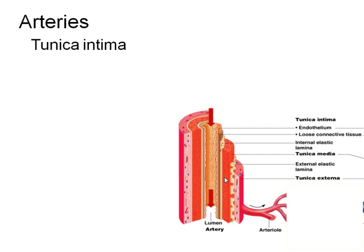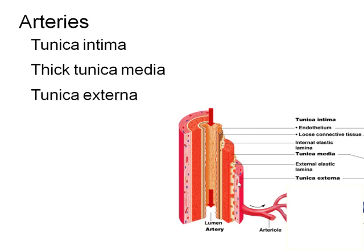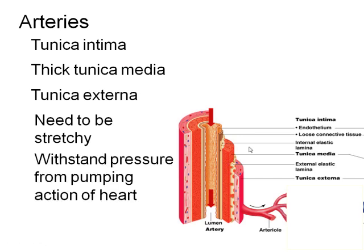Looking at arteries, the tunica intima is the internal layer — that single layer of epithelium. Then we have a rather thick tunica media and the tunica externa. Arteries need to be nice and stretchy, which is why there are usually elastic fibers mixed in with the muscles. Arteries are closest to the heart, so the pressure from the heart is greatest in the artery — that's why we need pressure hosing here.